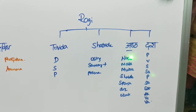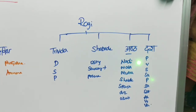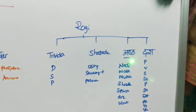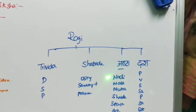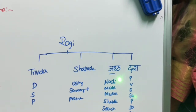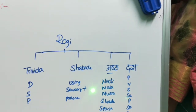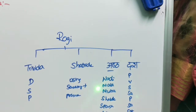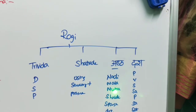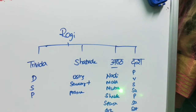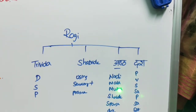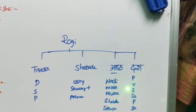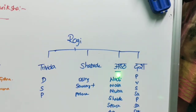Nadi means pulse — whether it is Vataja, Pittaja, or Kaphaja in nature. We examine the pulse rate to assess the person's health. Mala refers to feces — whether the patient has constipation or related issues. Mutra refers to urination — frequency and related aspects are examined in Mutra Pariksha, where Taila Bindu Pariksha is also performed.